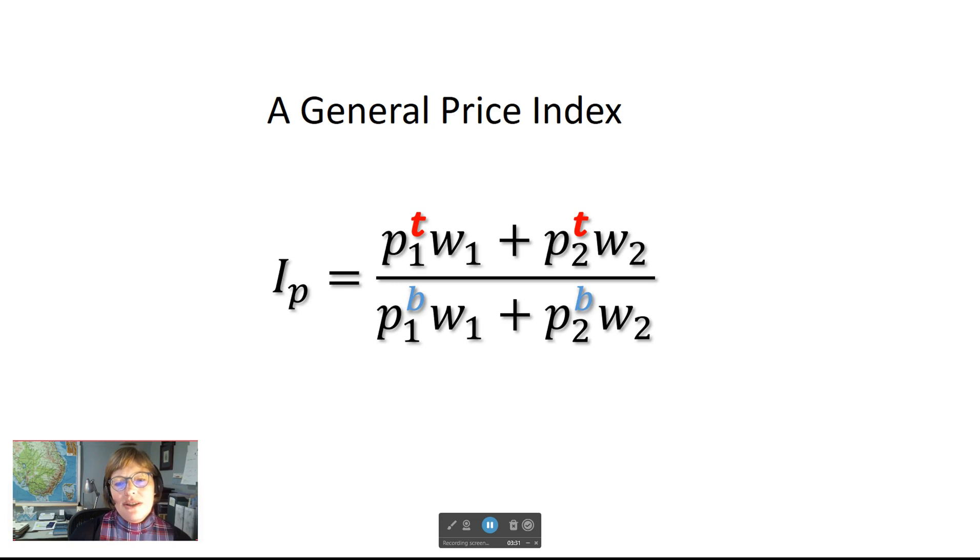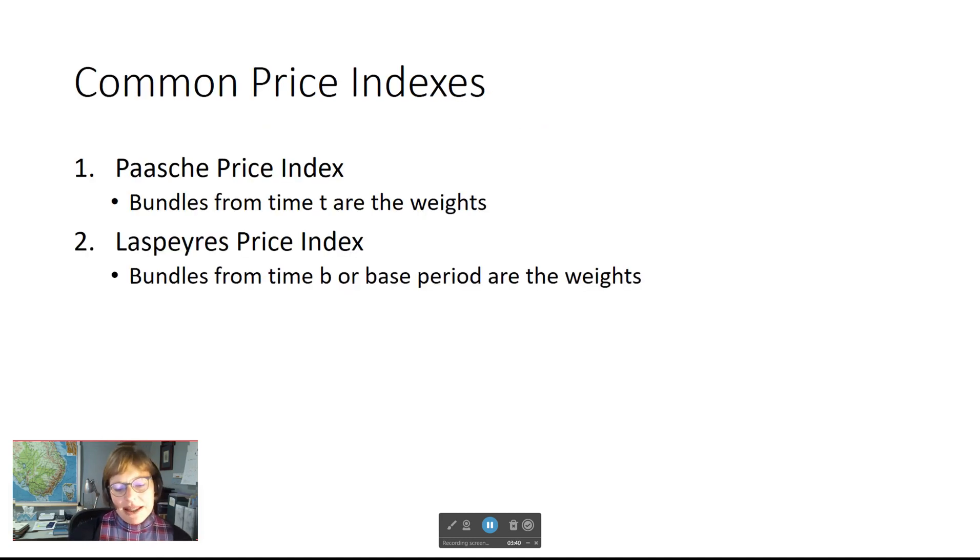The two types of price indexes we will focus on in this lecture are the Paasche price index and the Laspeyres price index. They are similar because they both use an amount of goods consumed by the consumer in the consumption bundle as the indexes.